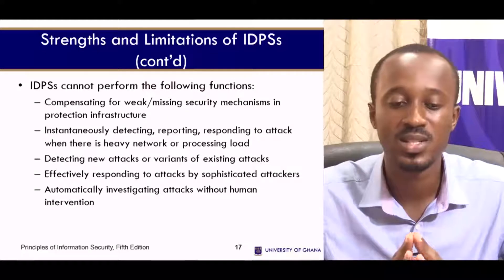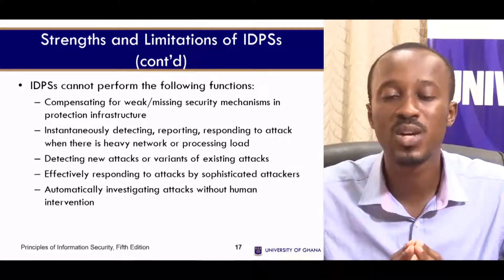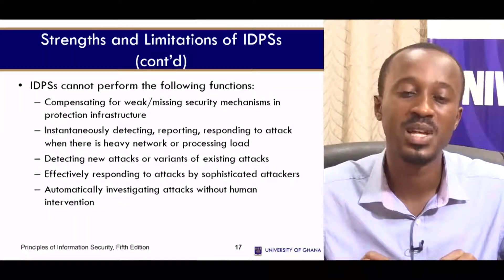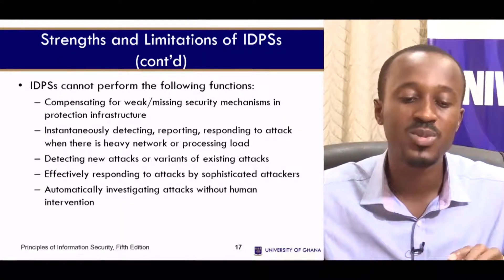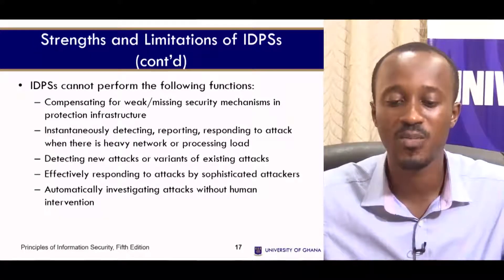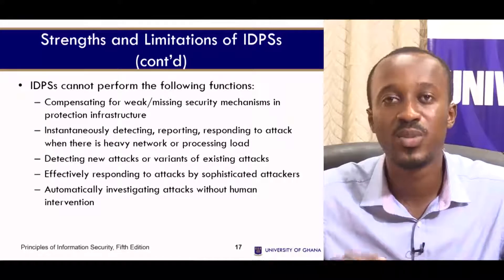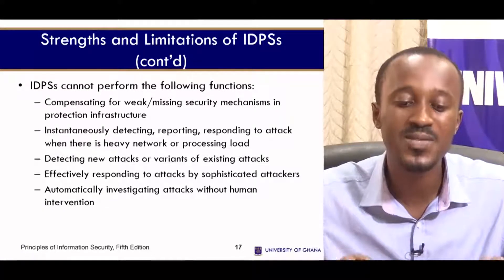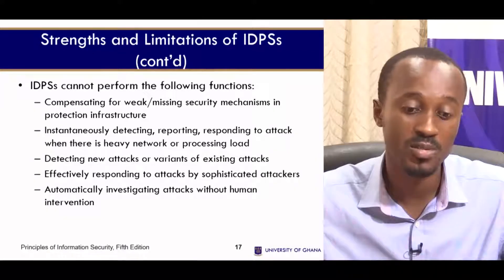Regarding limitations, intrusion detection and prevention systems cannot compensate for weak or missing security mechanisms in the protection infrastructure. They are also not able to instantaneously detect, report, and respond to attacks when there is heavy network or processing load — this is a major flaw. Additionally, they are not able to effectively respond to attacks by sophisticated attackers.